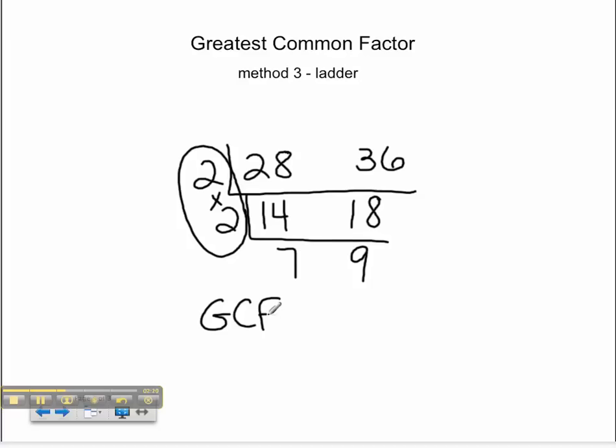Therefore, the greatest common factor is 4. This has been your tutorial on finding greatest common factor using listing, prime factorization and the ladder method.